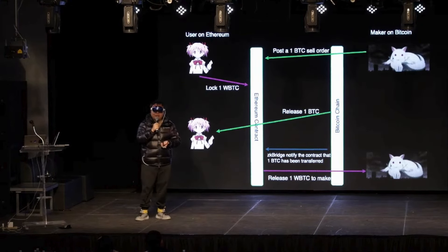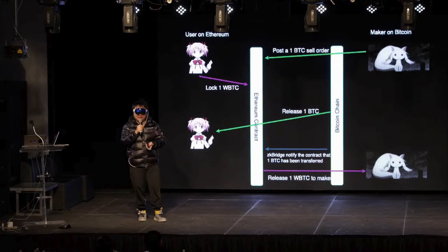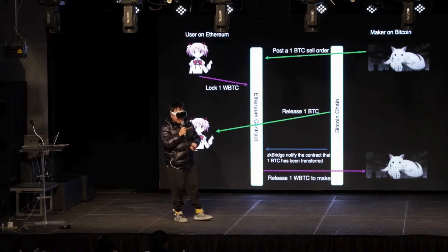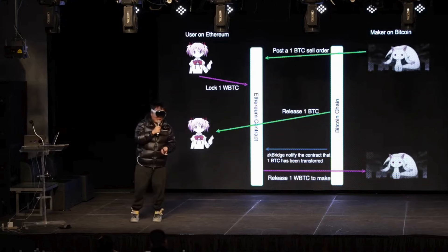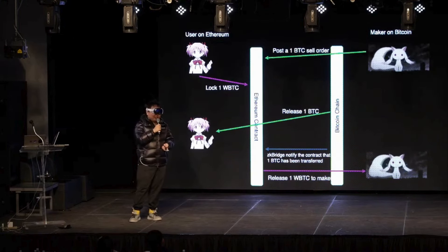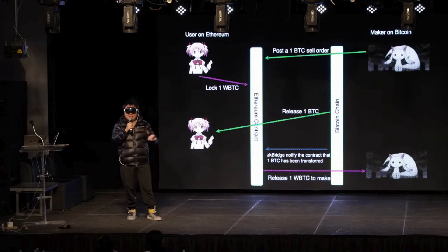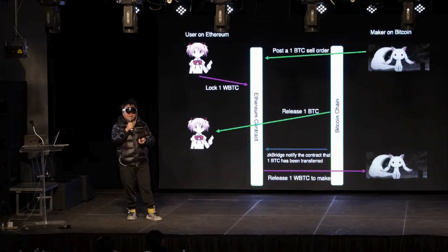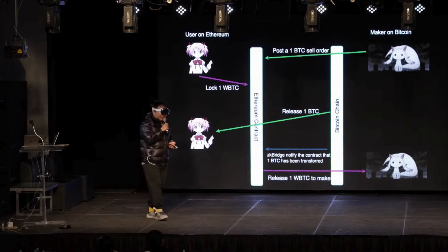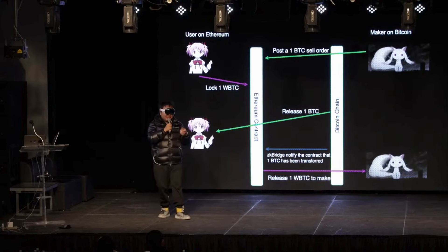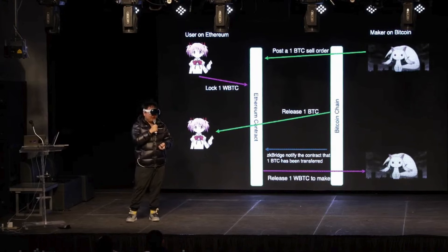The maker will post orders on the Ethereum smart contract, claiming that he wants to sell one Bitcoin. The user who sees the order will lock one wrapped Bitcoin on the Ethereum side, and the Ethereum smart contract will keep this wrapped Bitcoin locked for a time. Once the maker sees the user has locked the wrapped Bitcoin on the Ethereum side, he will decide to release his one Bitcoin to the user. Once this Bitcoin is released, the ZK Bridge will send this message to the Ethereum contract, saying one Bitcoin has been successfully transferred from the maker to the user.